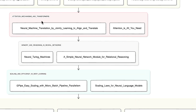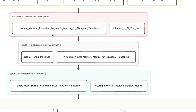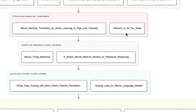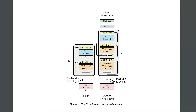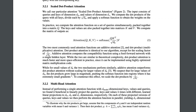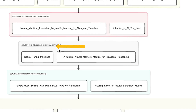Then we head over to Attention Mechanisms and Transformers, where you understand the attention mechanism and its revolutionary impact on sequence modeling. The first paper is 'Neural Machine Translation by Jointly Learning to Align and Translate,' introducing attention in sequence-to-sequence models. Then 'Attention is All You Need' — the revolutionary paper where you discover the transformer architecture that forms the basis of modern NLP models like GPT, used in almost all state-of-the-art models today.